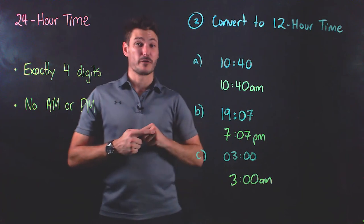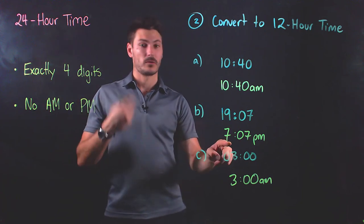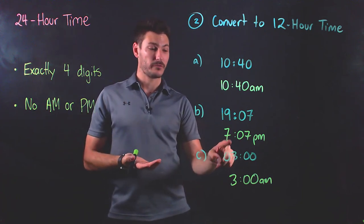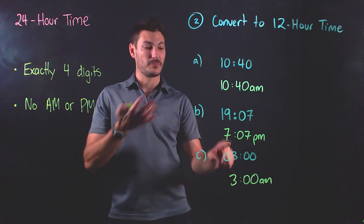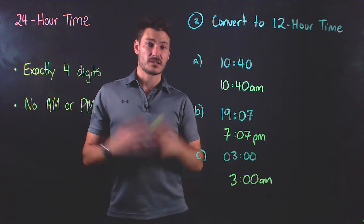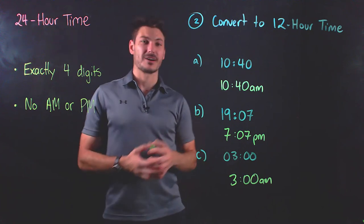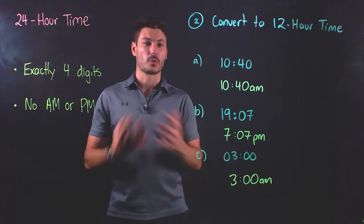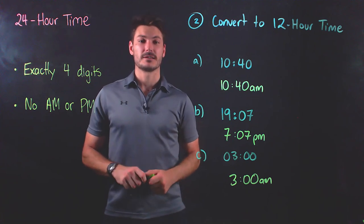Notice that if we wanted to convert backwards, we would say, well, it's going to be 12 plus this 7 would give me 19. And then I add 07 at the end because the minutes stay the same. So hopefully this gave you a bit of an idea how to convert to and from 24-hour time, and I hope you find it helpful.